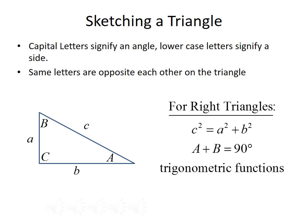A few things to remember for right triangles — we're going to use these rules to solve them. First, the Pythagorean theorem holds, so the square of the hypotenuse equals the sum of the squares of the legs. Second, the three angles have to add up to 180 degrees, and since the right angle is 90 degrees, the other two angles A plus B have to equal 90 degrees. Third, the trigonometric functions hold, so we can use SOH CAH TOA to find sides and angles.